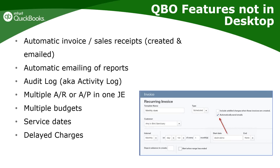With automatic report emailing in QBO, you can set up a customized, memorized report — like a collections report — to be automatically emailed to the business owner every Tuesday, or automatically send the balance sheet, income statement, and aging reports to a nonprofit's board of directors every month. You set it up once and QuickBooks handles it automatically, delivering reports directly to recipients' inboxes.